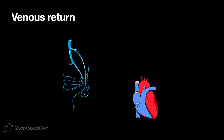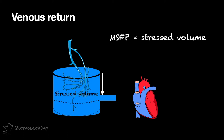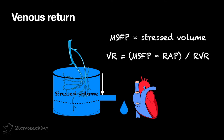We can conceptualise this like that fluid in the tank. So here we have a tank representing our splanchnic veins. Any blood in the veins that exerts pressure on their walls is like the volume in the tank above the outlet. And this is what we call stressed volume. It's the stressed volume that generates mean systemic filling pressure. The more volume there is above the outlet, the greater the pressure gradient between the tank and the heart, and therefore the greater the flow out of the tank. And the greater the venous return, the greater the cardiac output, as by definition they must be the same.